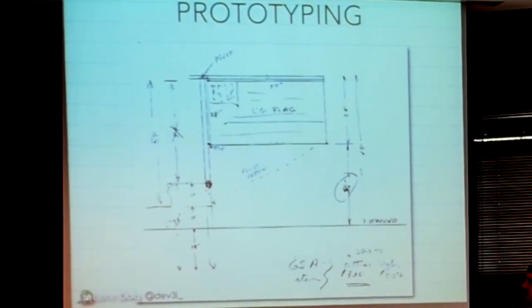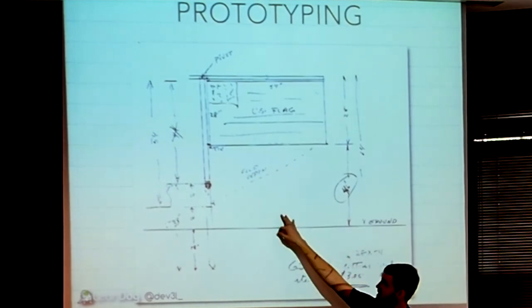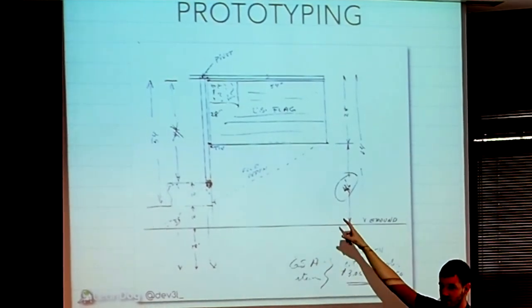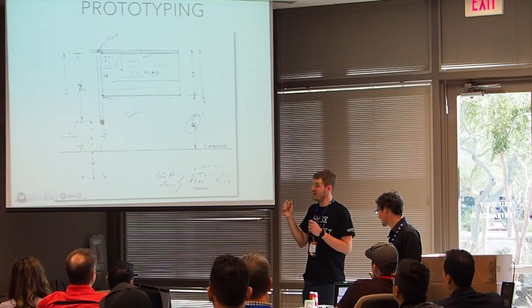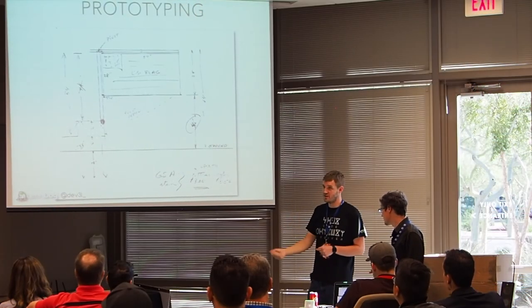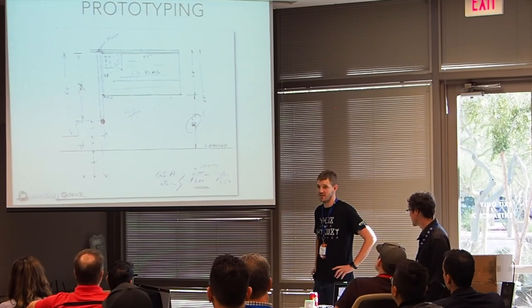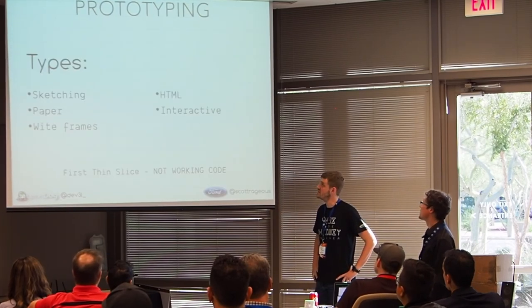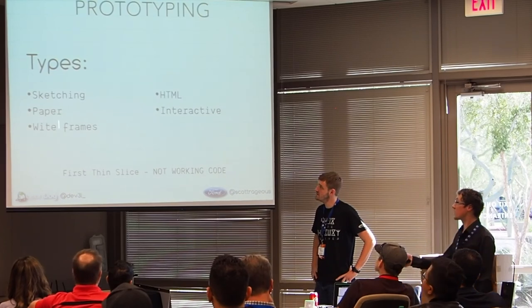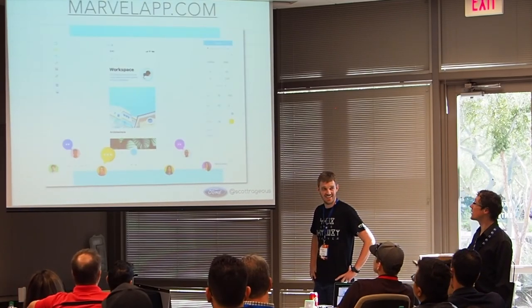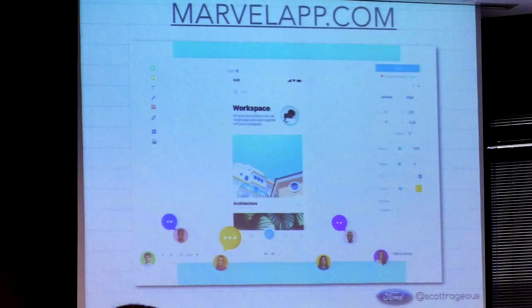There are simple ways to prototype. Like the moon lander — they said the flag on the moon is going to hang straight down, how do we get it up? An engineer was able to sketch this in a matter of minutes using actual measurements and piece parts, and they could say, 'This telescoping pole will fit and still meet the load requirement,' before even actually trying to build it. A simple sketch is all it takes. There's a tool called marvelapp.com where you can literally sketch on paper, take a picture of that sketch, and make it interactive. You can sketch a UI and make it interactive.